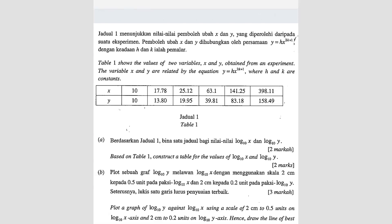Question number 10. Table 1 shows the values of two variables x and y obtained from the experiment. The variable x and y are related by the equation, so they give you this equation here where h and k are constant.